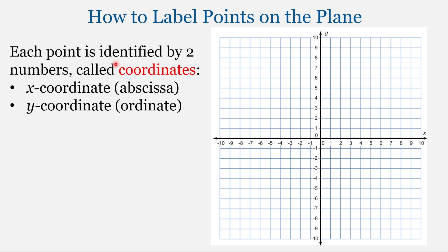So how do we label points on this plane? Now each point is going to be identified by two numbers. And those numbers are called coordinates. Those two coordinates are the x-coordinate, or abscissa, and the y-coordinate, also known as the ordinate.